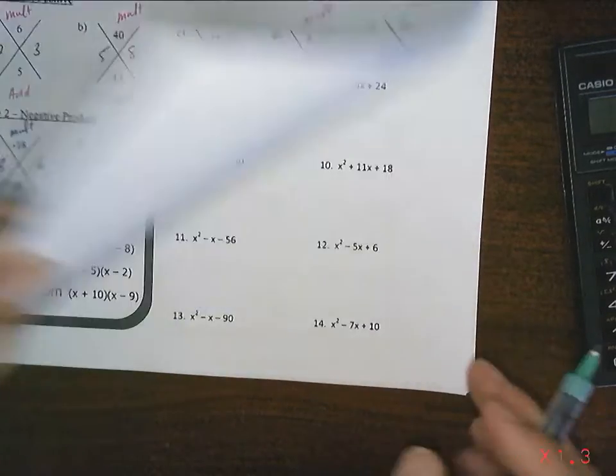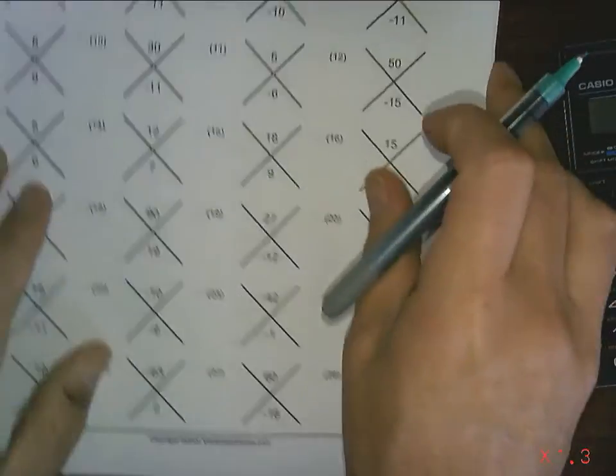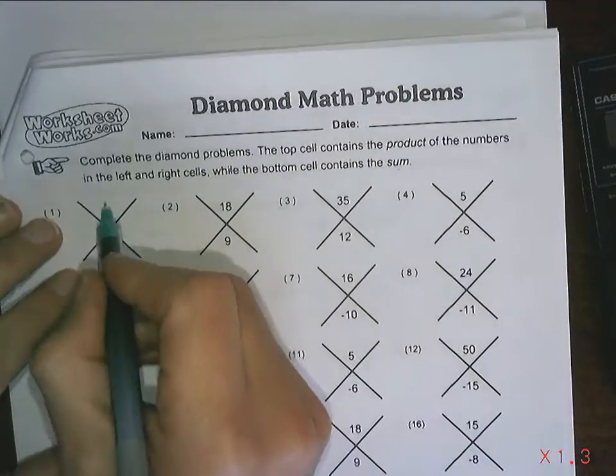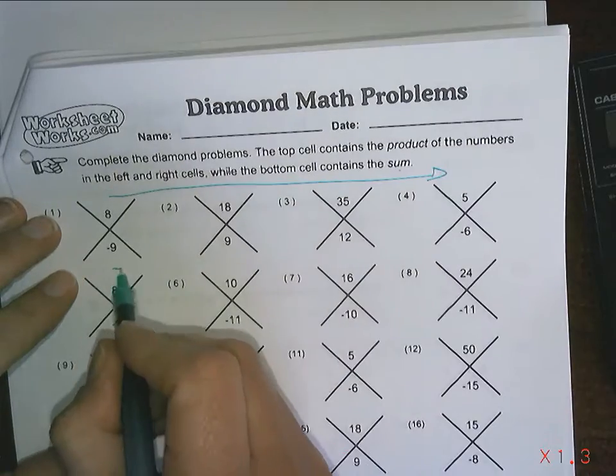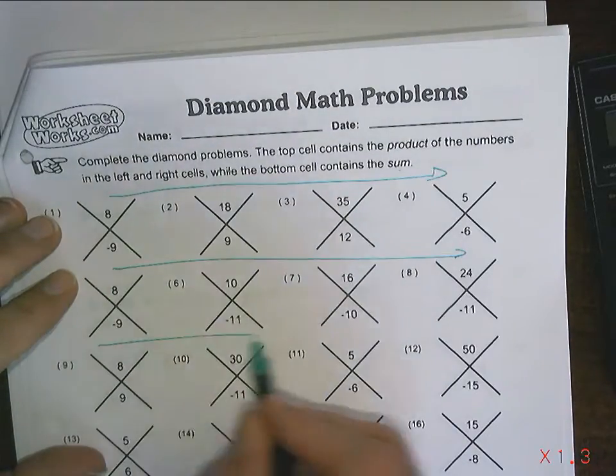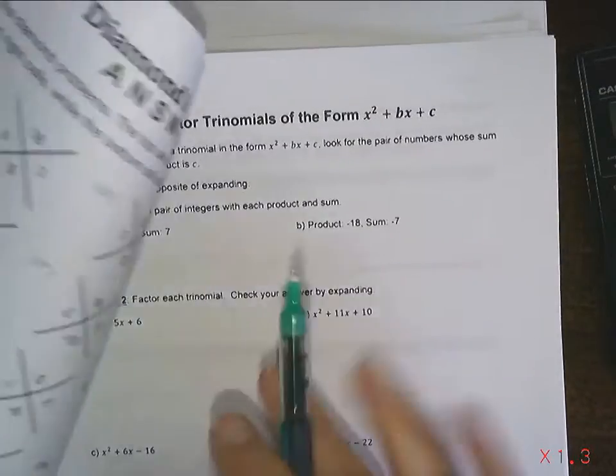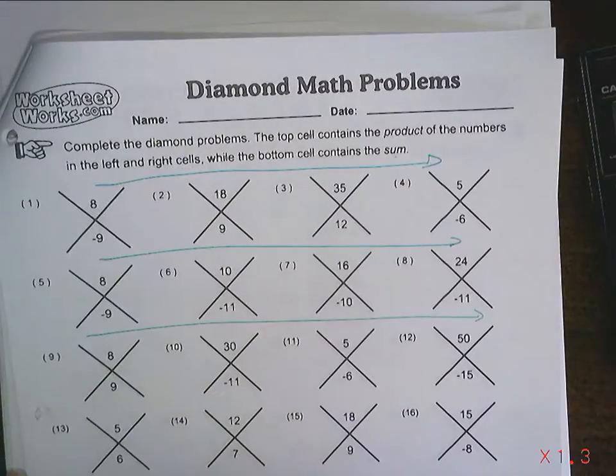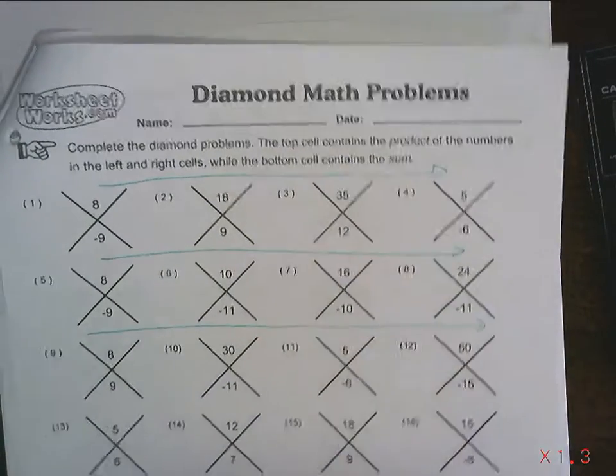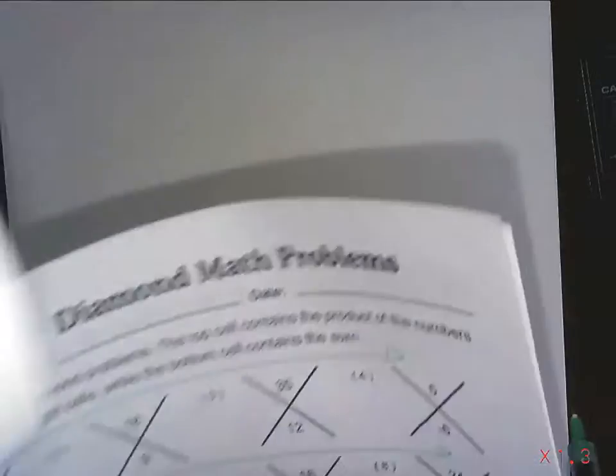What you need to do now, ladies and gentlemen, is flip through your package. Find this page. Do an entire row. Do another row. Do another row. And at the end of each row, flip over and check your answers. There's answers on the back. But do a complete row and then go and check your answers. The better you are at this, the easier factoring is going to be.